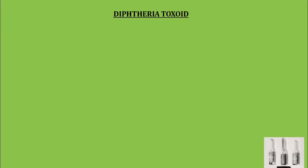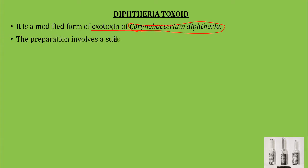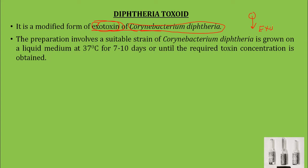We now discuss in detail the preparations of the two important toxoids: diphtheria toxoid and tetanus toxoid. Diphtheria toxoid is a modified form of the exotoxin of Corynebacterium diphtheriae. Toxins are of two types — exotoxin and endotoxin. If the toxin is produced and released out of the cell, it is an exotoxin; if it remains within the cell, it is an endotoxin. The diphtheria toxin from Corynebacterium diphtheriae is an exotoxin.